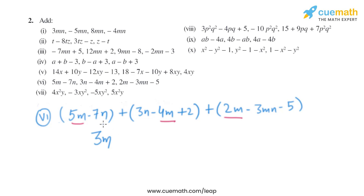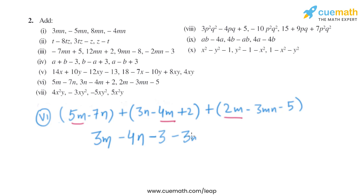For the n terms: minus 7n plus 3n gives us minus 4n. For the constants: plus 2 minus 5 gives us minus 3. And we write minus 3mn as it is, since there are no other like terms with mn. So the result is 3m minus 4n minus 3mn minus 3.